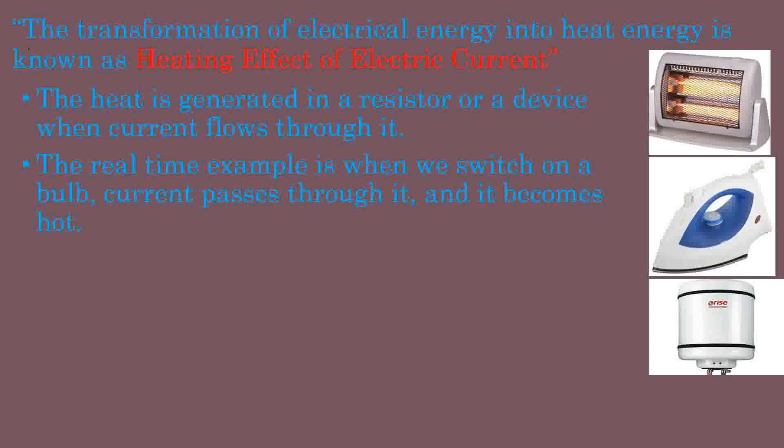Metals like tungsten and nichrome, which have high resistance, are used for heating appliances. A real-time example is when we switch on a bulb — current passes through it and it becomes hot. Part of the electrical energy passed to the bulb is converted into heat, and therefore the bulb becomes hot.